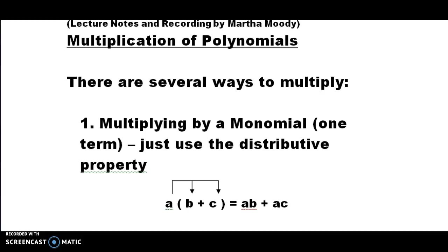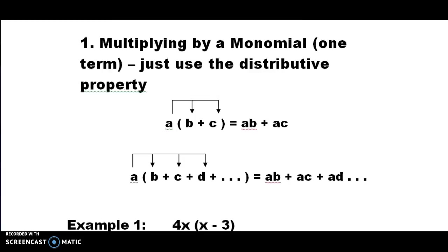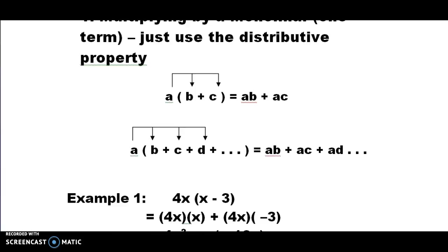In this instance, what we're going to do is just use the distributive property. Out front we have a monomial, which is A, and inside the parentheses we have other monomials, namely B and C in this example. Using the distributive property we have A times B plus A times C. We can have as many terms inside the parentheses as we want to, but we'll just continue to use the distributive property.